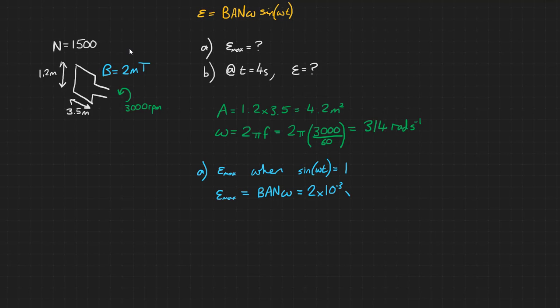So substituting our values: 2 times 10 to the minus 3 multiplied by our area 4.2 multiplied by 1500 turns multiplied by our rotational velocity 314 radians per second gives us 3.96 kilovolts.